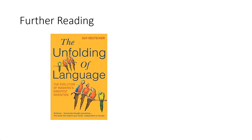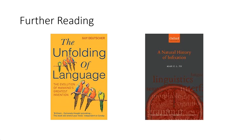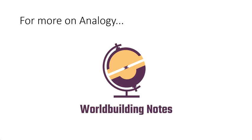For further reading on the evolution of the Semitic triconsonantal systems, as well as a bunch of other stuff, I highly recommend the book 'The Unfolding of Language' by Guy Deutscher. While for more on infixing, check out 'A Natural History of Infixation' by Alan C. Yu. And if you're looking to learn more about analogy, I've been asked to lend some assistance regarding this exact topic, so join me over on the Worldbuilding Notes channel to see how Eva and I can incorporate some analogy into her conlang.